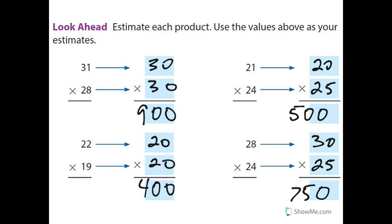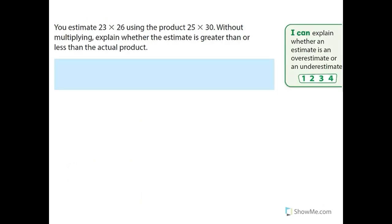So that's estimation. And we're also going to talk about whether our estimation is an overestimate or an underestimate. So you estimate 23 times 26 using the product 25 and 30. Without multiplying, explain whether the estimate is greater than or less than the actual product.